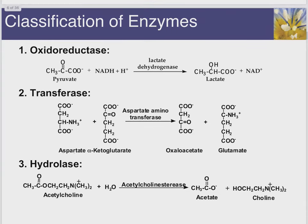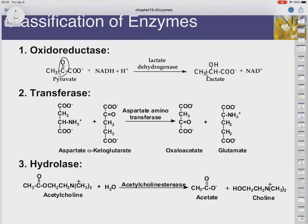Here are some examples. In an oxidoreductase situation, we see pyruvate getting reduced — the carboxyl here becomes an alcohol group, so it got reduced. Lactate dehydrogenase: pyruvate was the molecule before and now it's called lactate after. Lactate dehydrogenase would also work on lactate and remove that hydrogen to make pyruvate again. So enzymes can sometimes catalyze both-direction reactions.